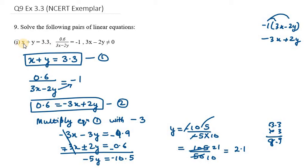Now we need to find the value of x. We can use equation number 1 to find the value for x. So x plus y equals 3.3. Now y is 2.1, so I will put the value of y as 2.1. So it is x plus 2.1 equals 3.3. So x equals 3.3 minus 2.1, which gives us 1.2 as x.